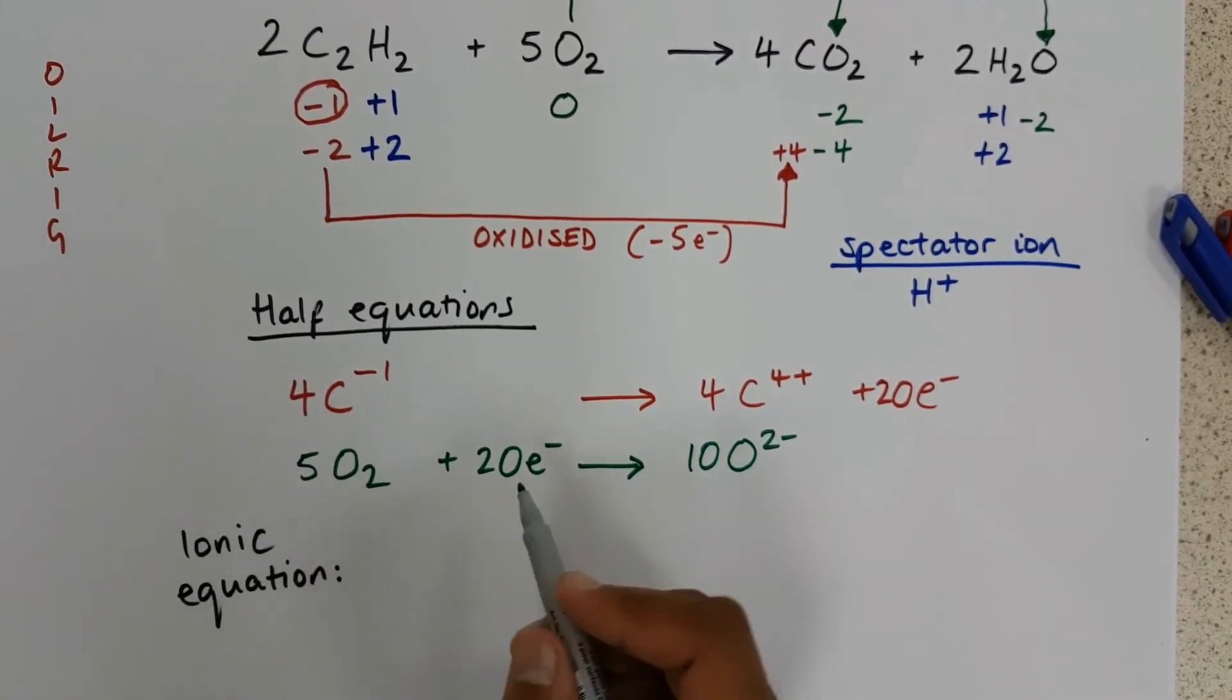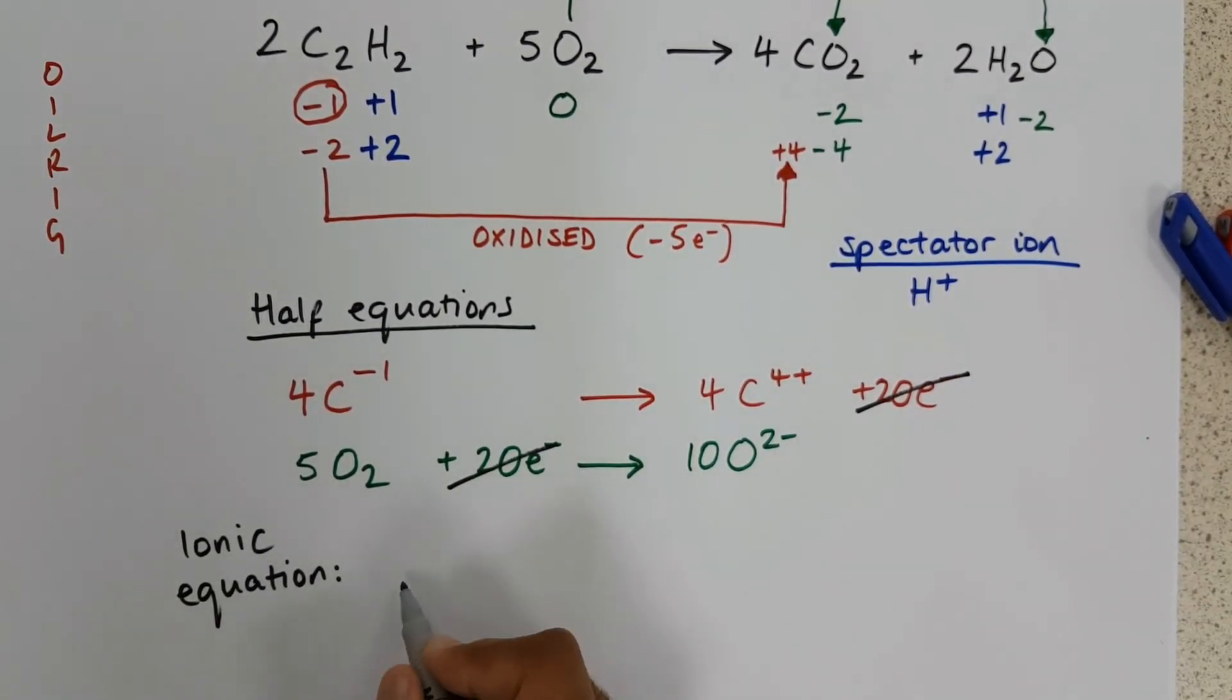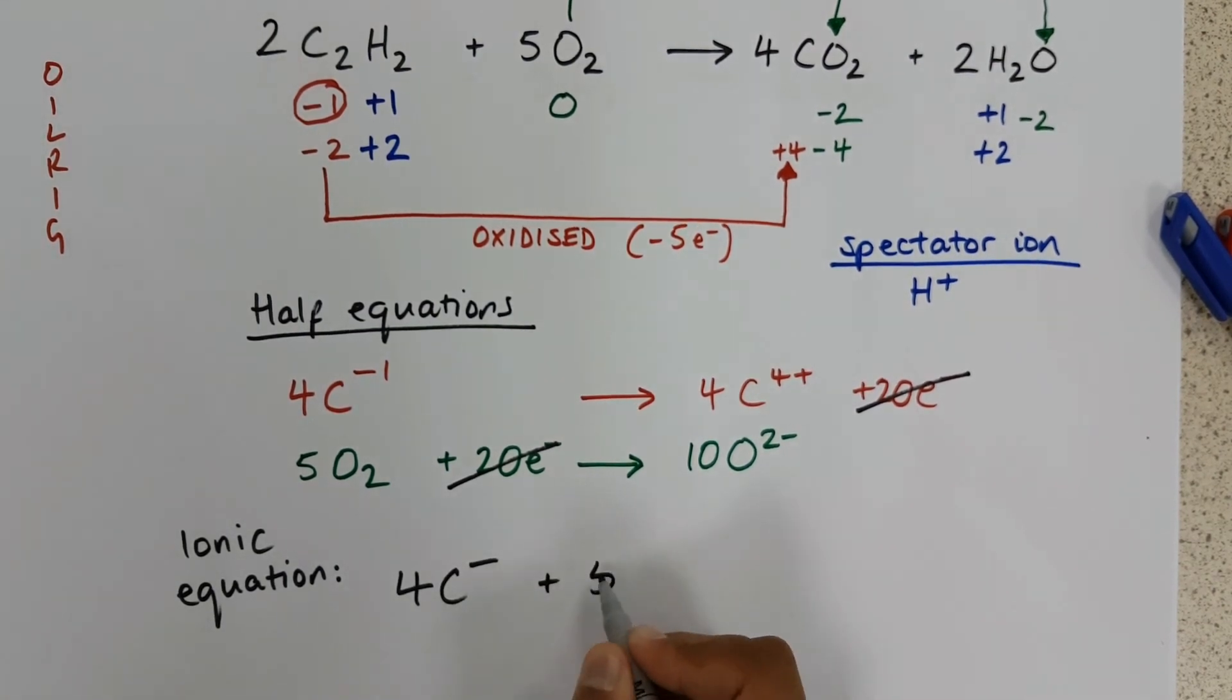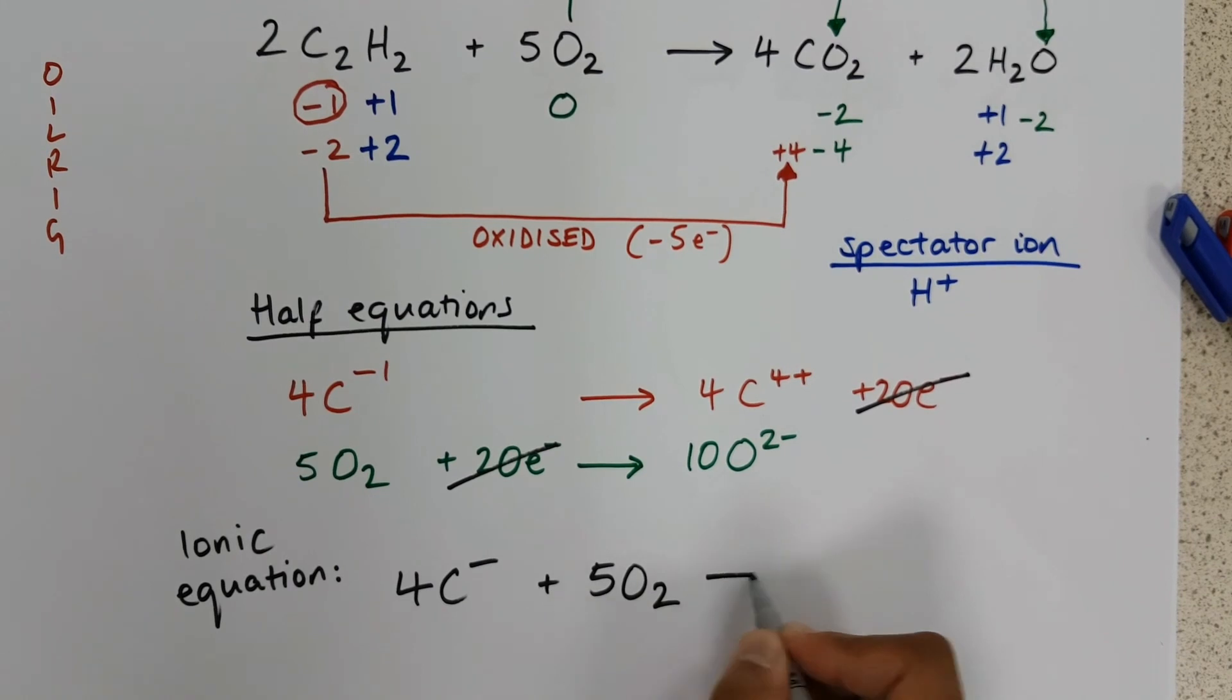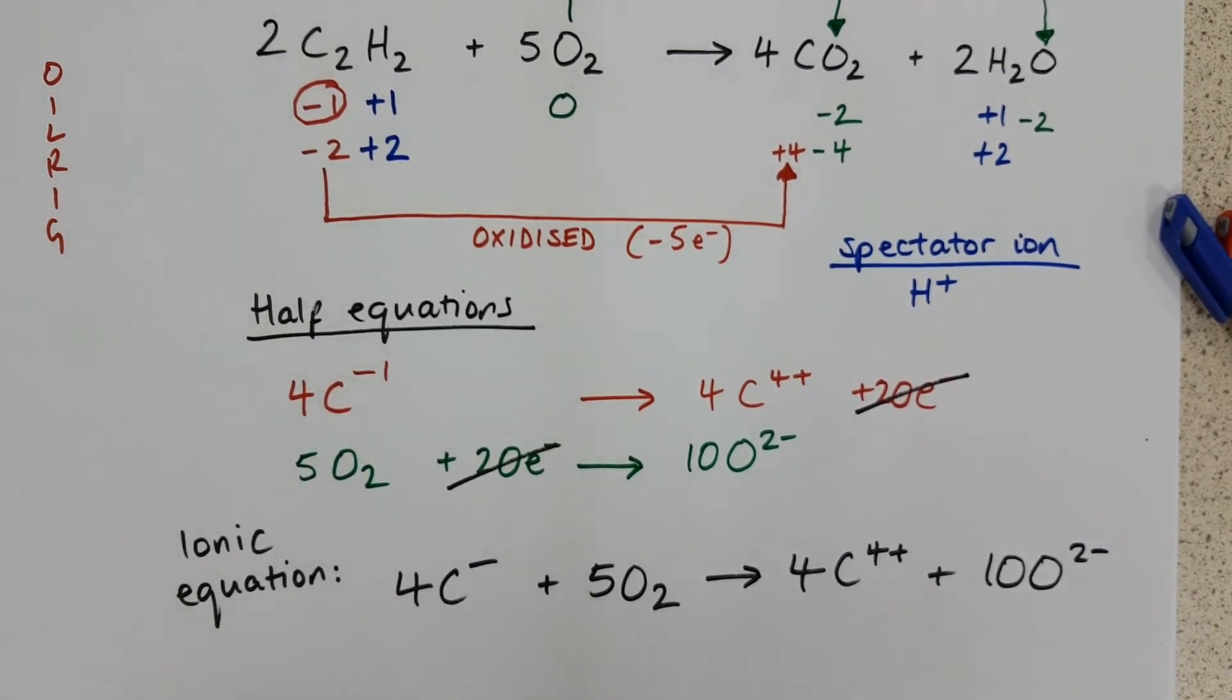And again, if we combine these, we can see that the 20 electrons on either side cancel out. Leaving us with four carbon minuses, plus five oxygen. Four carbon four plus, and ten oxygen three minus.